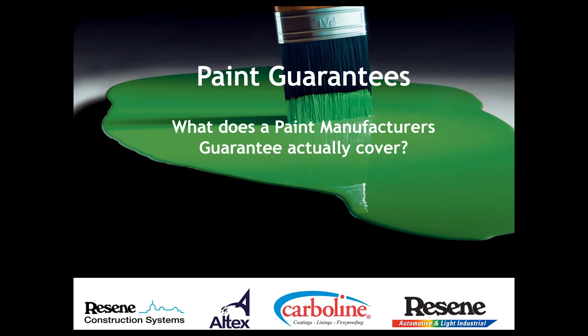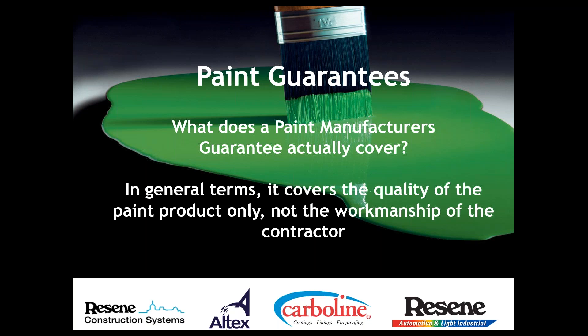As you've just seen with all the issues we've looked at, nothing in there is actually a paint failure or paint product issue — all of them relate to substrates, environmental conditions, or moisture. So what does a paint manufacturer's guarantee actually cover? In general terms, it covers the quality of the paint product only. It doesn't cover the workmanship of the contractor — that's their responsibility.